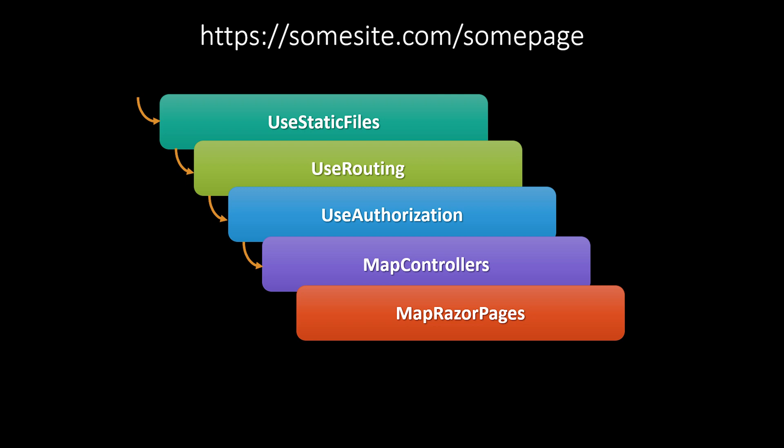Finally, when we get to map controllers, it looks at all the routes in the route table, and if it doesn't recognize the URL, it calls the next. And finally, we're down to Razor pages — if it knows about it, it fulfills the request. If no one can fulfill it, it's going to end up being a 404. But if some page is an actual Razor page it can map to, it fulfills the request by filling in the response and then returns — which takes it back up through map controllers, authorization, routing, static files — and finally sends that content to the user.